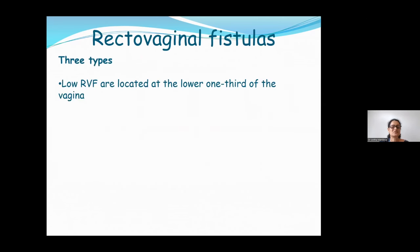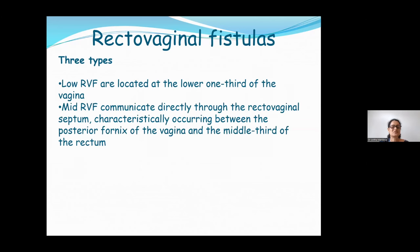The level of posterior vaginal wall involvement categorizes rectovaginal fistulas into three types. Low rectovaginal fistulas at the lower one third of the vagina are most commonly due to obstetric causes or vulval/vaginal malignancies. Mid-rectovaginal fistulas communicate through the rectovaginal septum between the posterior fornix and middle third of the rectum — all radiation-induced fistulas are most commonly mid-rectovaginal. High rectovaginal fistulas are seen between the sigmoid colon or rectum and the peritonealized portion of vagina, due to pelvic procedures, neoplasms, or inflammatory diseases.